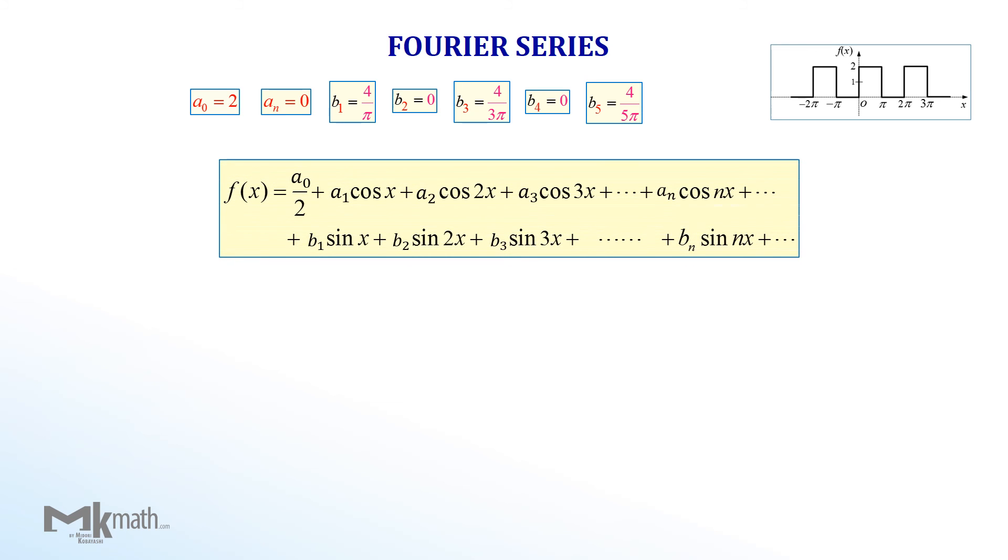Let's substitute those values into the Fourier series formula. The constant 2 goes into a0 position. Since we found all other a values are 0, the series contains no cosine terms. Finally, we substitute b values which are coefficient of sine terms.